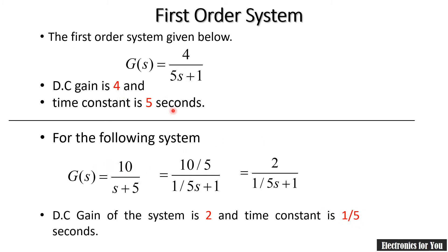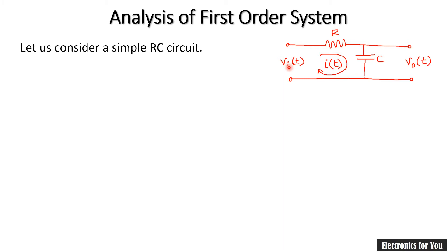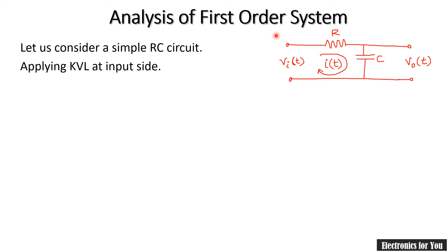Now consider an RC circuit for analysis of a first-order system. Vi(t) is the input signal, Vo(t) is the output, and R and C are the resistor and capacitor. This is a series RC circuit that we will analyze as a first-order system. Let us apply KVL at the input side.